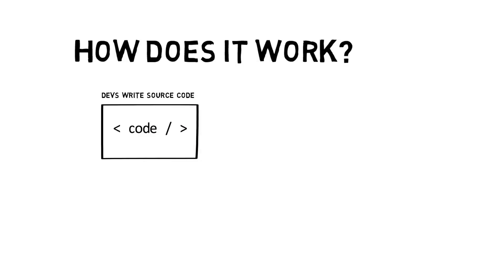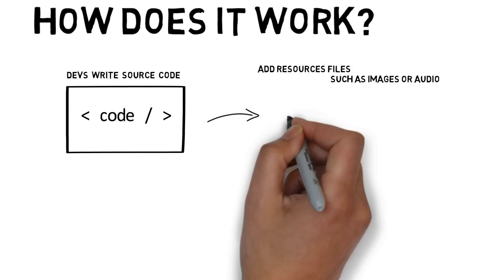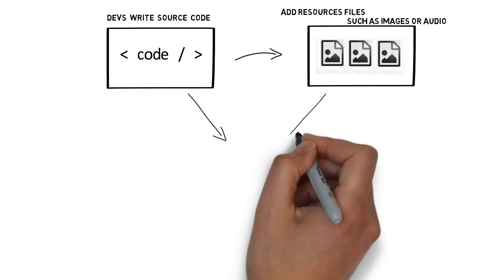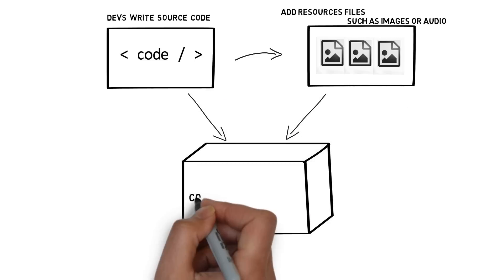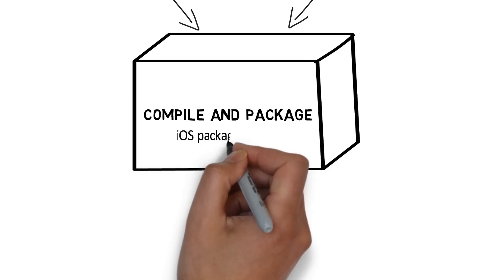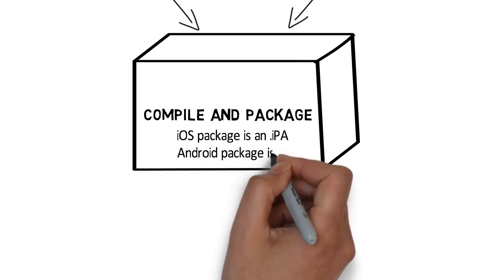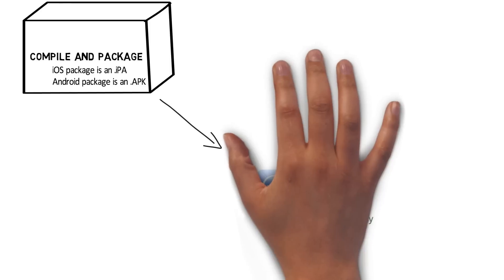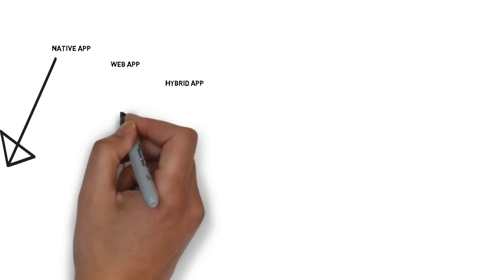Developers will write the source code and add resource files such as images and audio. When they're ready to submit to the App Store or the Play Store, they'll need to compile and package their application. The iOS package is an IPA, and the Android package is an APK. Once compiled and packaged, they'll be able to submit to the App Store or the Google Play Store — or Windows, if you're into that kind of thing.